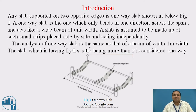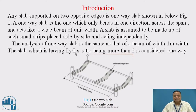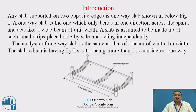The analysis of one-way slab is same as that of analysis of a beam of one meter width. The slab which has L-Y by L-X — where L-Y is the longer span and L-X is the smaller span — with the L-Y by L-X ratio being more than two is considered as one-way slab. That means whenever we consider any slab, if we find the ratio of longer span to shorter span more than two, then and then only we can design it as one-way slab.